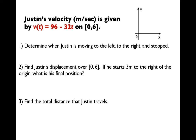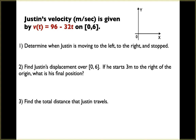Justin's velocity in meters per second is given by v(t) = 96 minus 32t on the interval zero to six. First, determine when Justin is moving to the left, to the right, and when stopped. We find when velocity is positive and negative using a sign chart and finding zeros. Setting 96 minus 32t equal to zero gives 32t equals 96, so t equals 3.